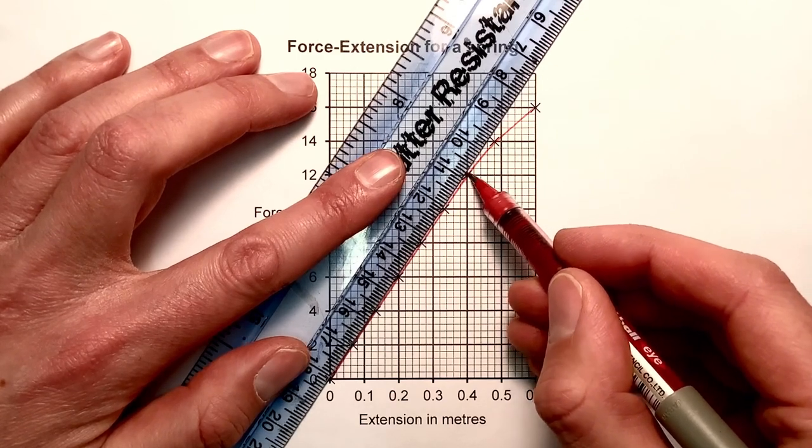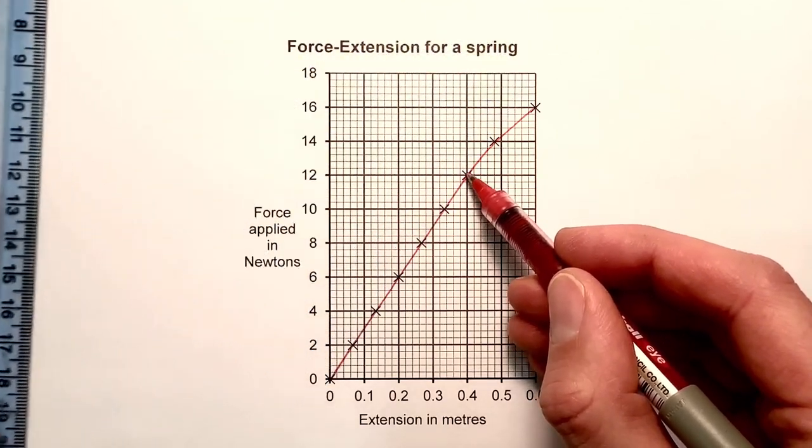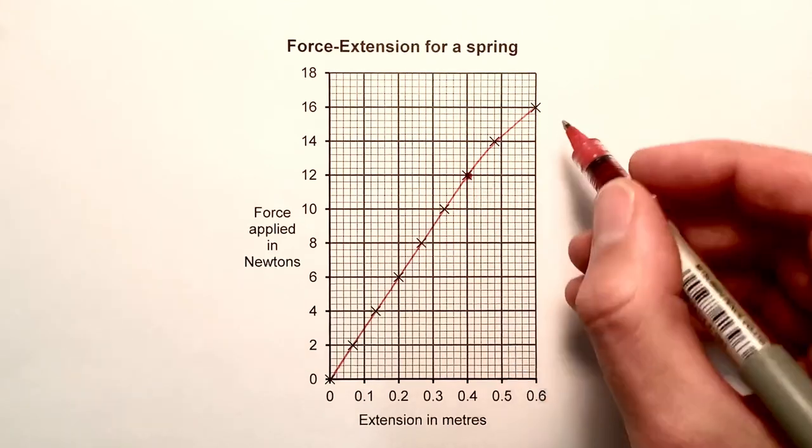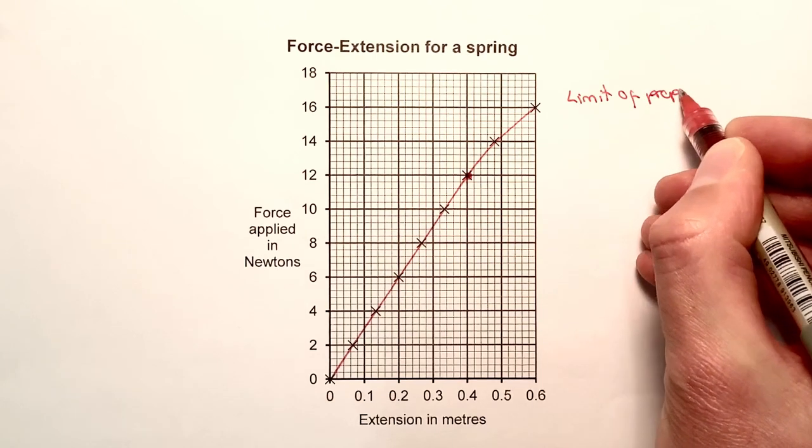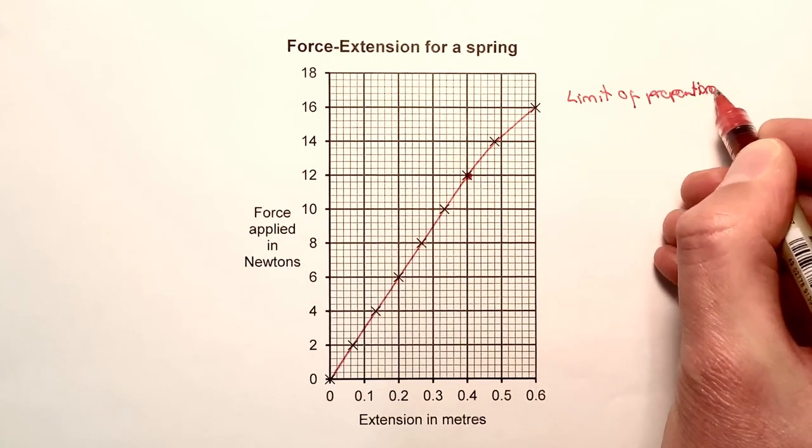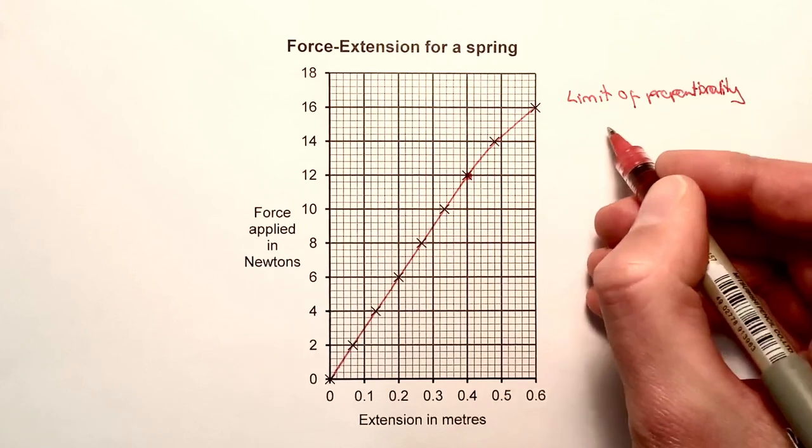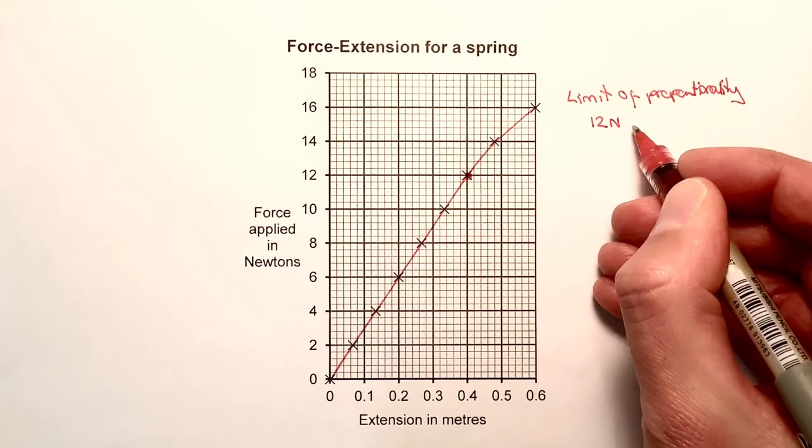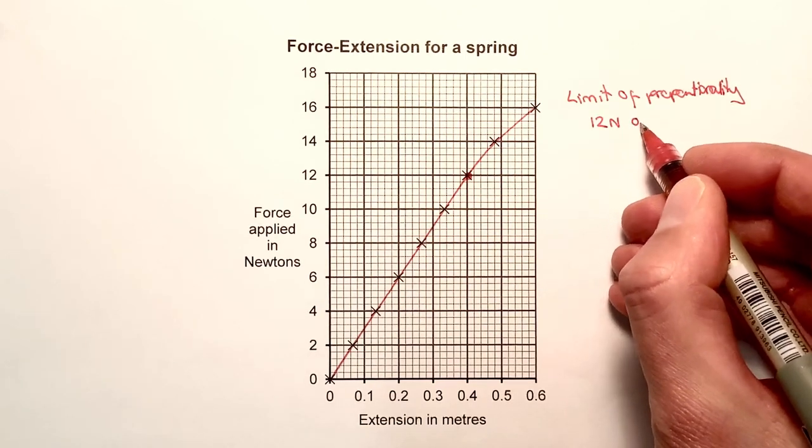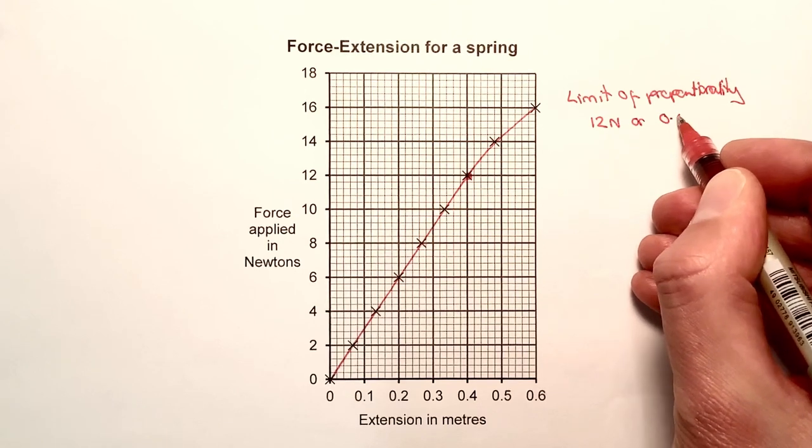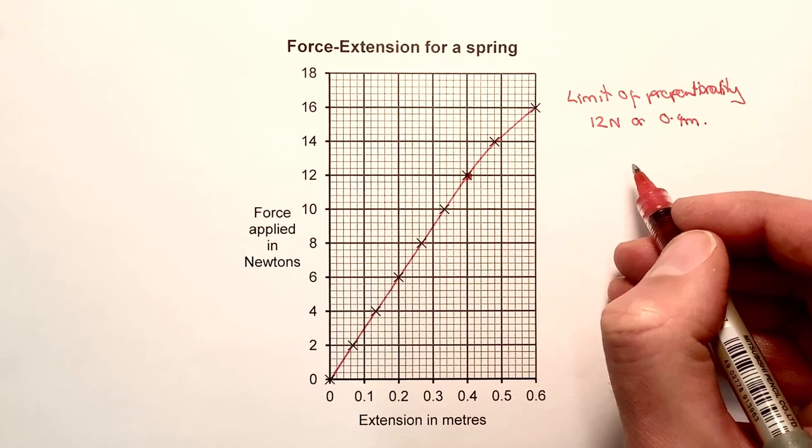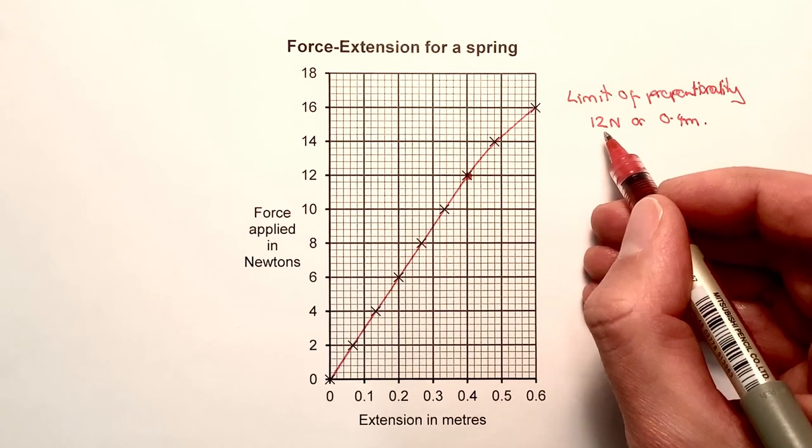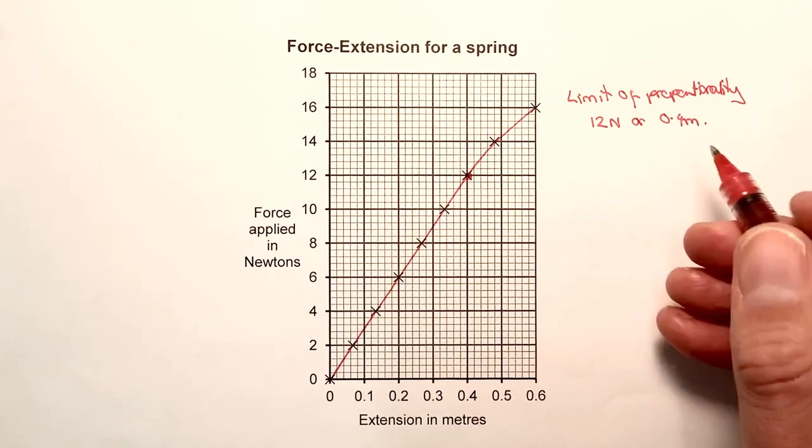straight line at this point here. So that would be our limit of proportionality. We would say the limit of proportionality is equal to 12 newtons of force applied, or we could say 0.4 meters of extension. So we could define the limit of proportionality either in terms of the force or of the extension, but